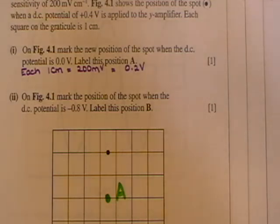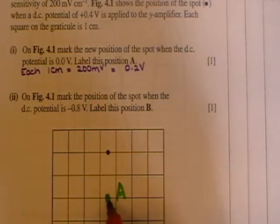On figure 4.1 then mark the position of the spot when the DC potential is minus 0.8. Label this position B. And so if it's minus 0.8 that means you have to go down another four squares beneath that. So there's one, two, three, four and it's down here. And we're labeling it position B.